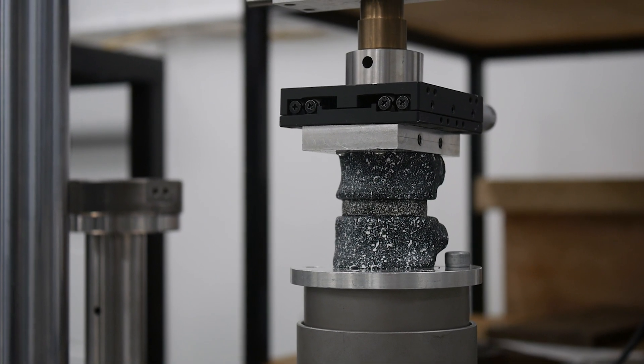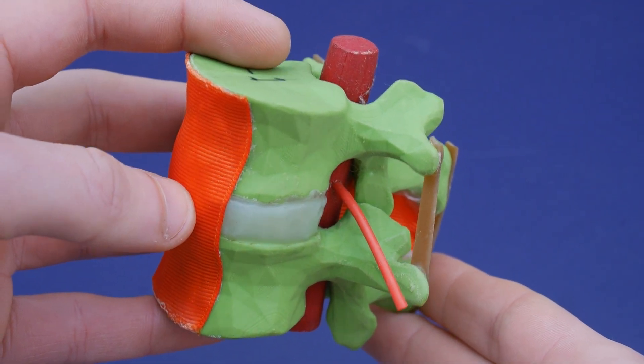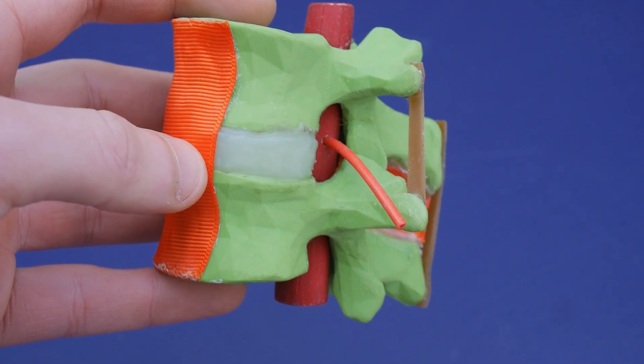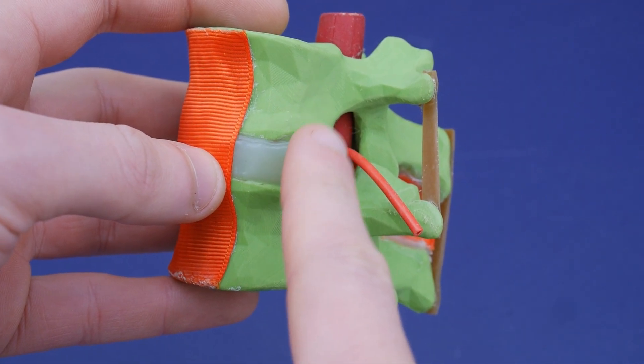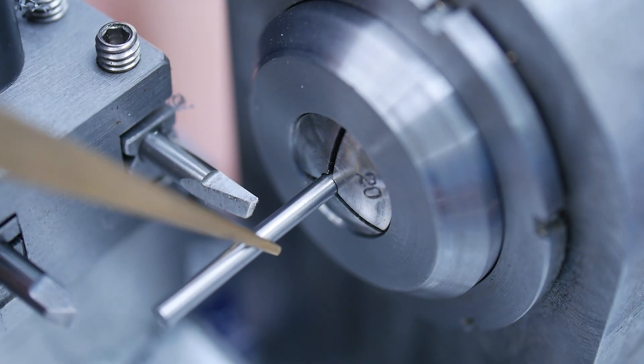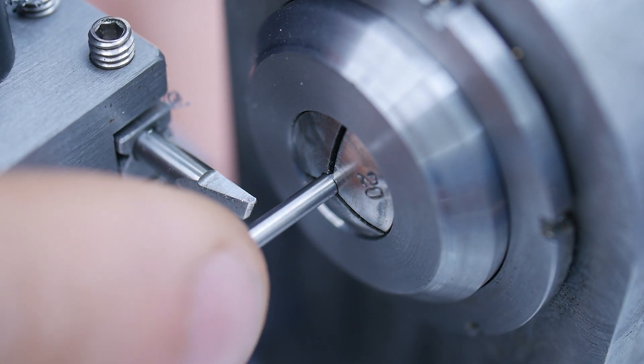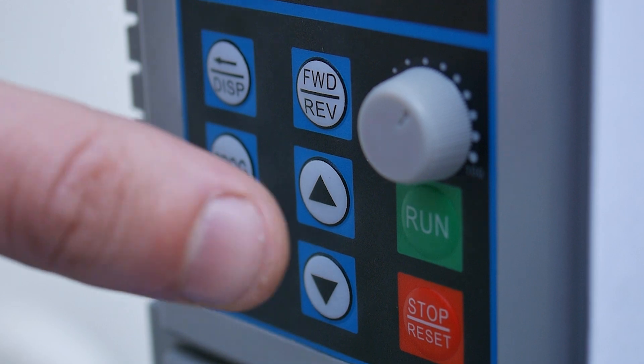Over half of the population experience back pain at some point in their lives. A common cause is degenerative disc disease, which is when the intervertebral disc becomes damaged. It may bulge and press against surrounding nerves. In this video, I show some of the work behind my PhD where I aim to alleviate this issue with a novel artificial disc replacement.